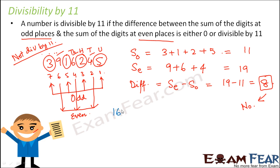So now we consider the number 1,6,1,1,3,1,2. You have to determine if this number is divisible by 11 or not.